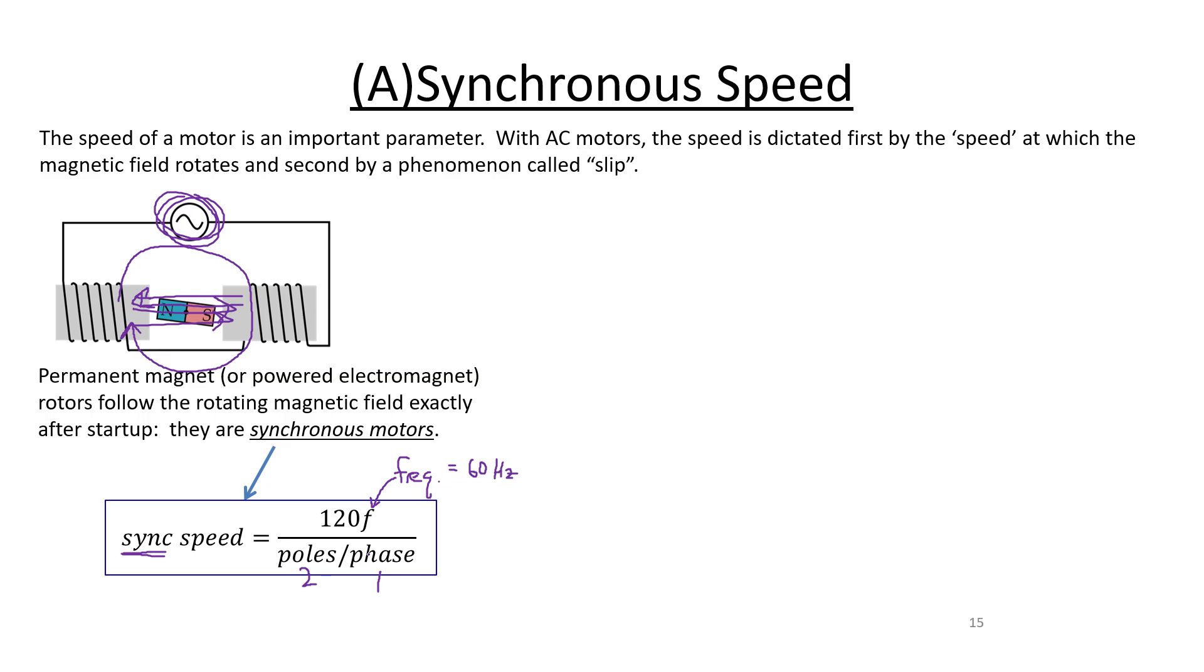So 3,600 revolutions per minute rpm. Great. So if we put in our frequency and our poles and our phases correctly, then for any synchronous motor, for any AC motor, then we can figure out what the speed of rotation of the magnetic field is around the stator. And thus we know what the synchronous speed would be. So in other words, the rotor speed of a synchronous motor.